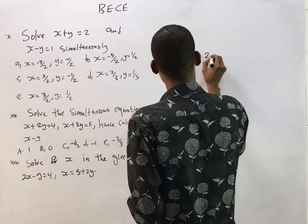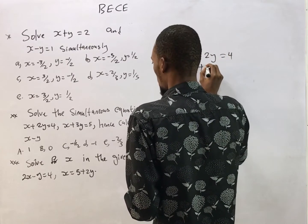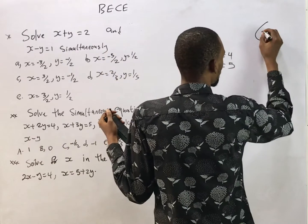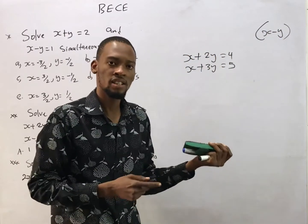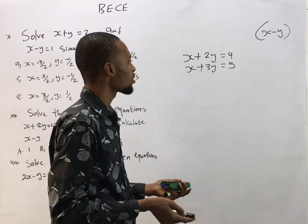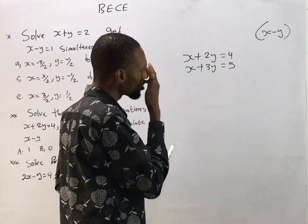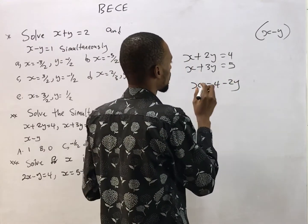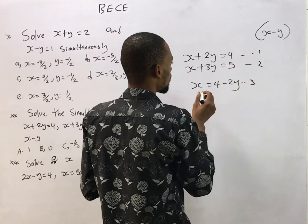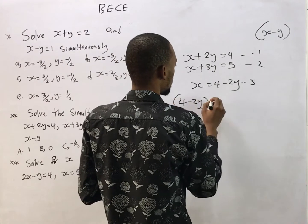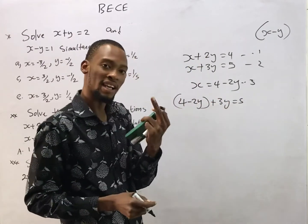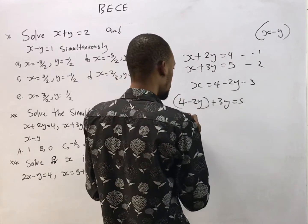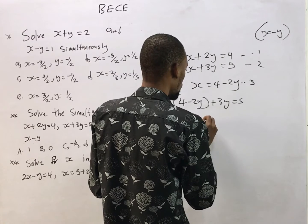Now for the second question: s plus 2y equals 4 and s plus 3y equals 5. They're asking us to calculate s minus y, which means find the value of s and the value of y, then subtract. Using the substitution method, from equation 1 make s the subject: s equals 4 minus 2y — call this equation 3. Substituting into the second equation: 4 minus 2y plus 3y equals 5, which gives 4 plus y equals 5.